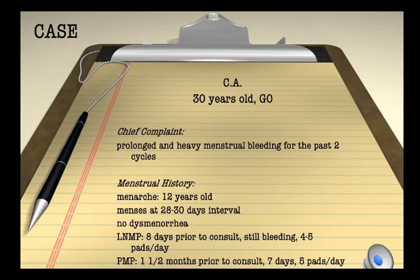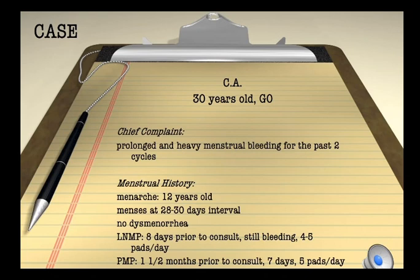Case 2: CA, 30 years old, nulligravid, with a chief complaint of prolonged and heavy menstrual bleeding for the past 2 cycles. She had her menarche at 12, with previously regular menses at 28 to 30 days interval and no associated dysmenorrhea. Her LMP was 8 days prior to this consult and she is still bleeding, soaking about 4 to 5 pads per day — already beyond 7 days, so definitely abnormal. The past menstrual period was 6 weeks ago, beyond 35 days, which is also abnormal.